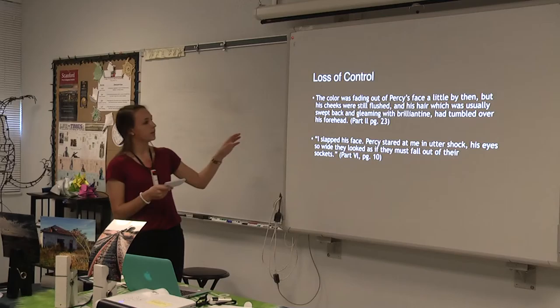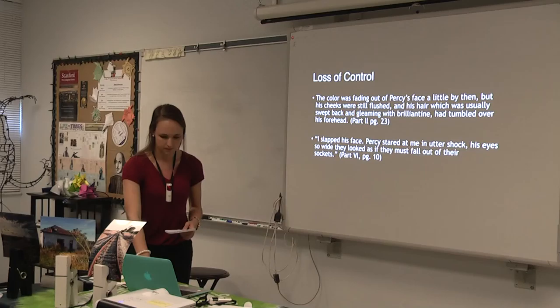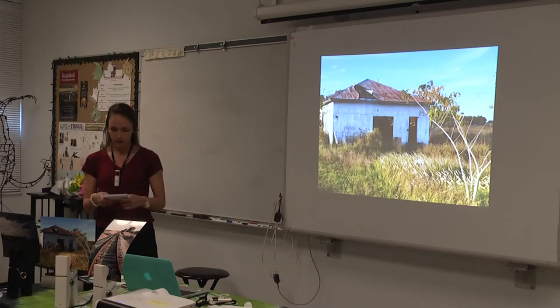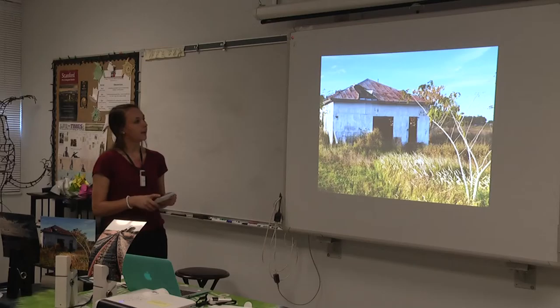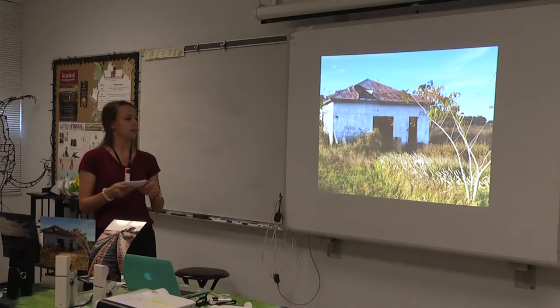These examples show Percy slipping farther from being in control. It says the color was fading out of Percy's face, his cheeks were flushed, and his hair — usually swept back and gleaming — had tumbled over his forehead. He is also shocked when Paul smacks him in the face and doesn't know how to react. The photo I chose for Percy is an old, worn-down shack, because it is unraveling just as Percy is. The decaying roof and worn-down structure reflect how, throughout the novel, Percy goes mentally insane and loses himself.